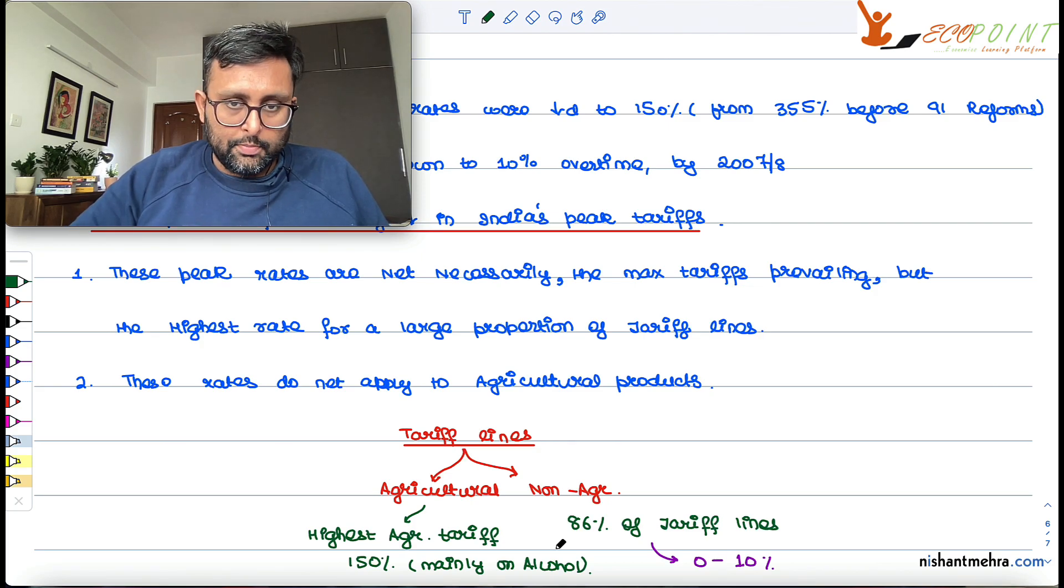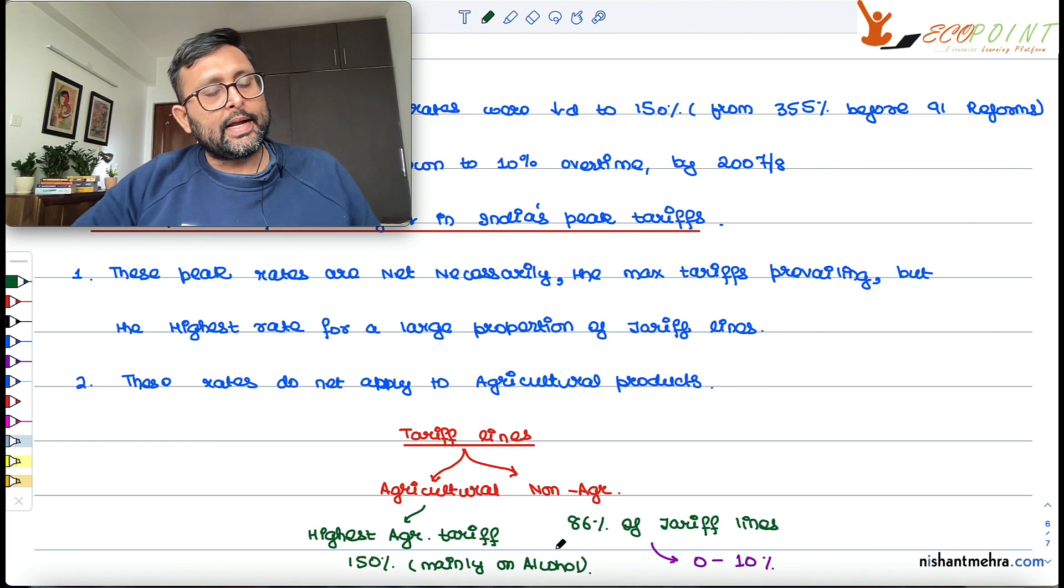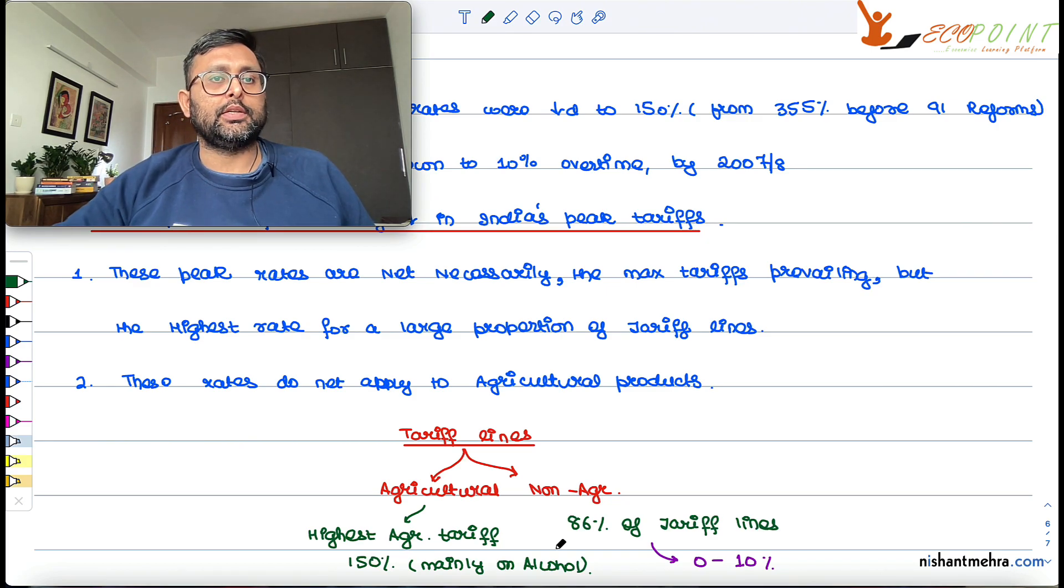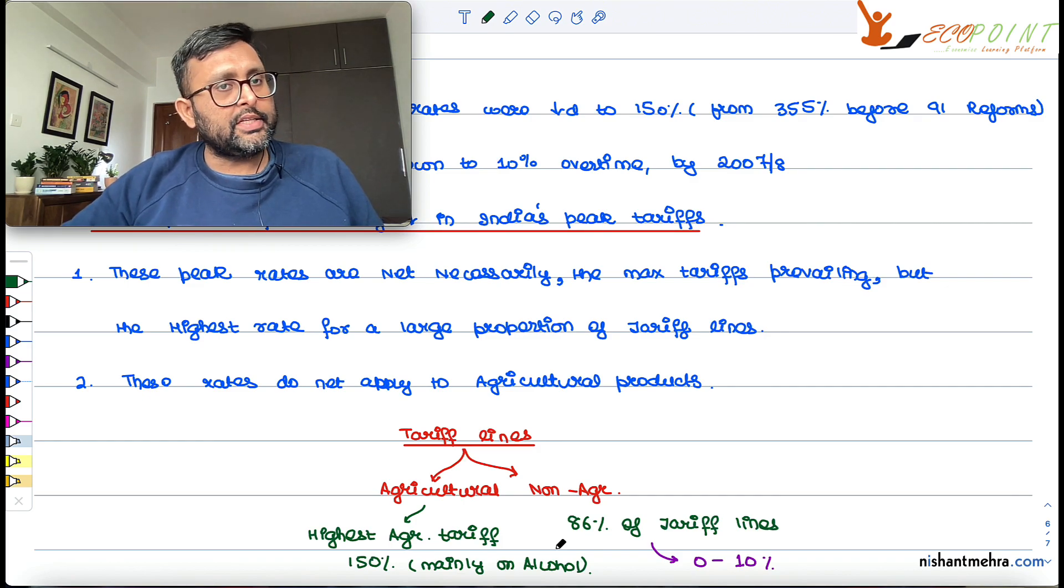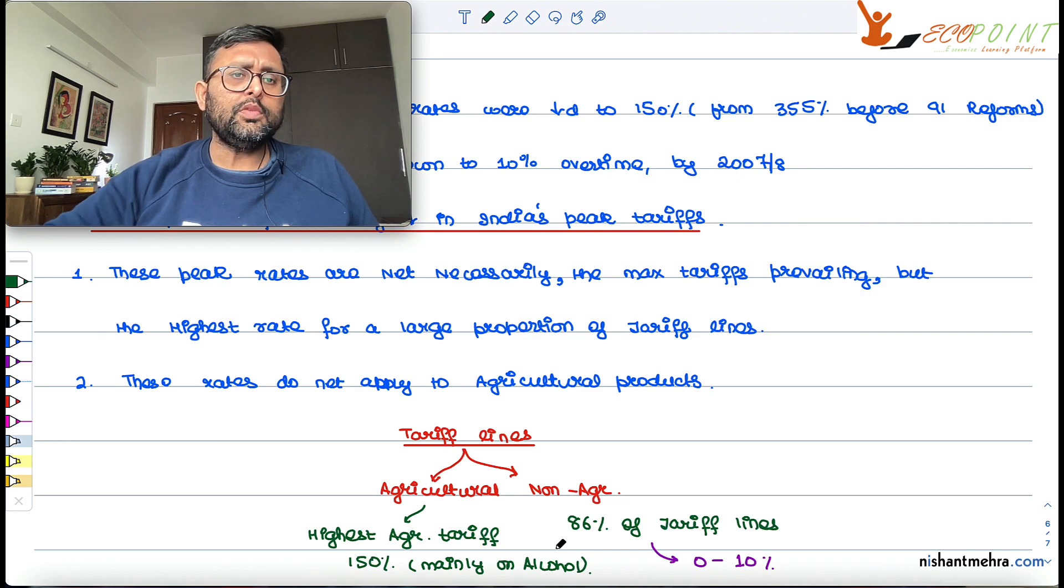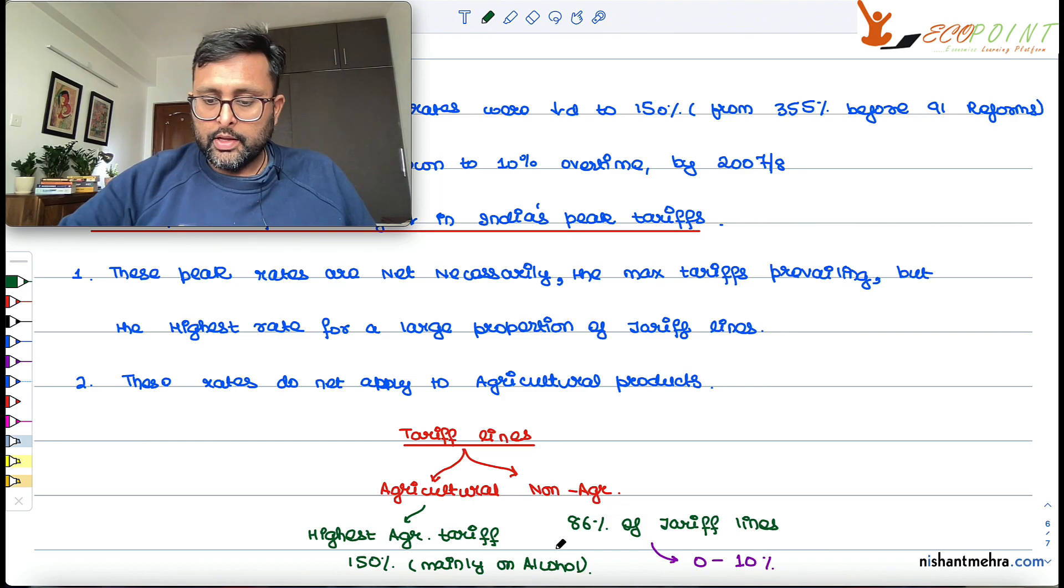So what is it that you can conclude from the discussion till now? One, the peak rates have declined. Just imagine, you were sitting at 355% in 1991, reforms it suddenly went to 150%, and then over the time it went even till 10%. As far as agricultural products are concerned, there are some products on which yes the tariffs are still high, but there are very very small proportion. And on the non-agricultural products which are around 86% of the tariff lines, only 0 to 10% tariff is being imposed. So just imagine where were we and where we are right now. We have reduced the tariff rates a lot. Our peak rates have reduced. So this is one explanation.